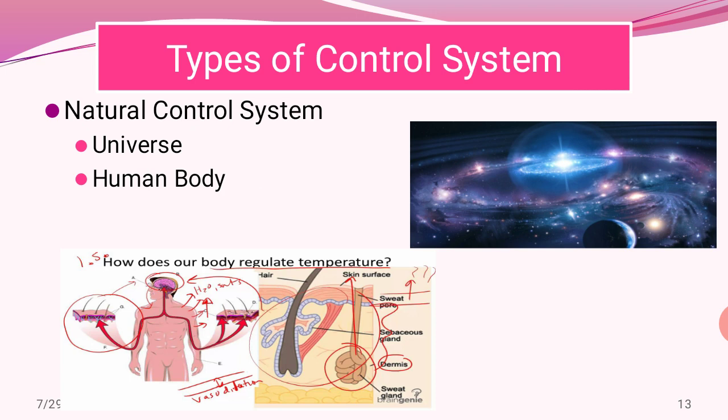The best examples of natural control systems are the universe and the human body. The temperature of a human body tends to adjust depending upon the atmospheric temperature. This happens through the sweat glands present on the human skin surface. As the temperature increases, the human body's temperature is adjusted automatically by the sweat glands on the skin surface, making the human body a kind of control system that controls temperature depending on the environment.